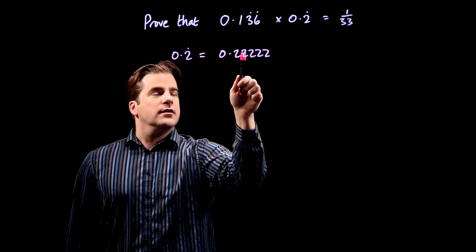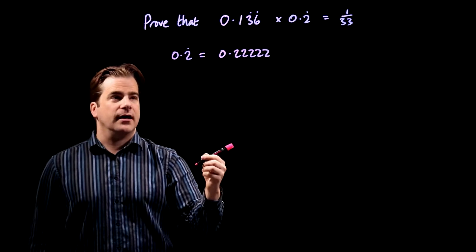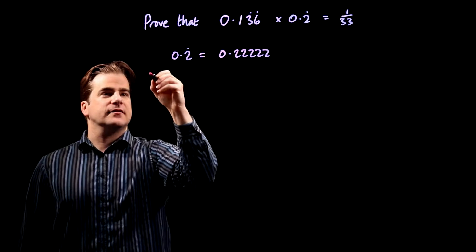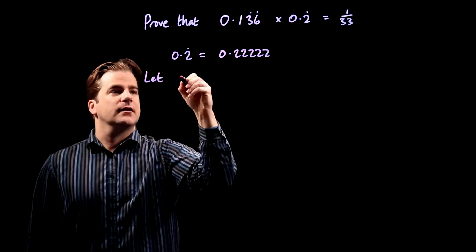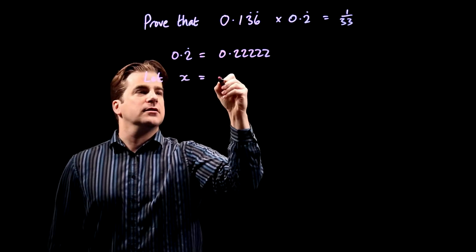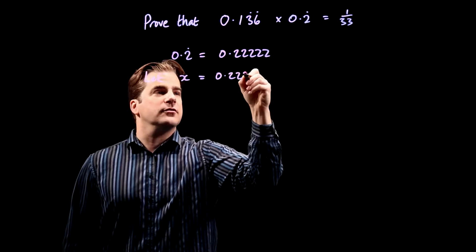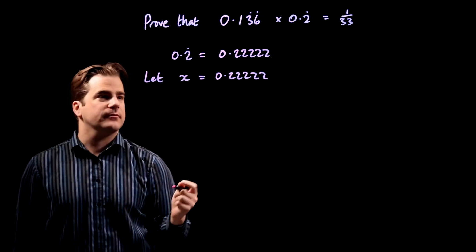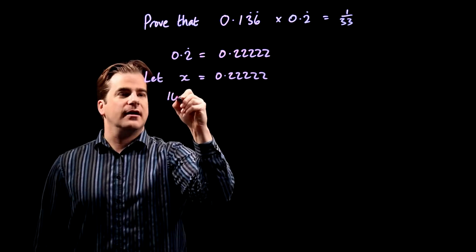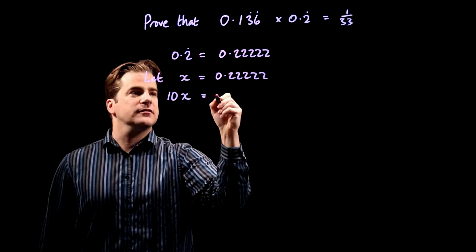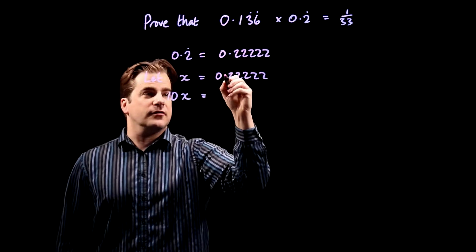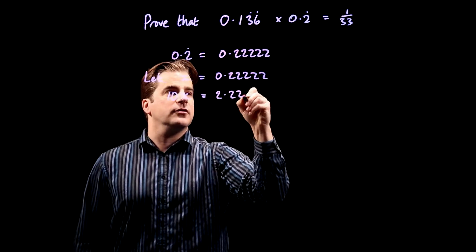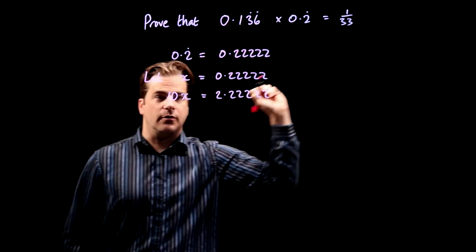When there's only one digit recurring, you multiply by 10. I'll show you what I mean. So the first thing you say is let x equal 0.222222 and so on. And we're going to multiply both sides by 10. So therefore, 10x equals, that becomes, just move the decimal one place to the right, 2.222222 and so on.